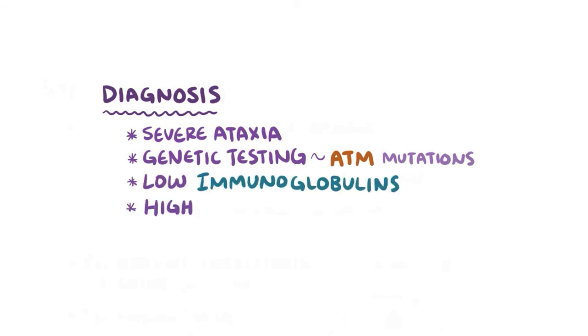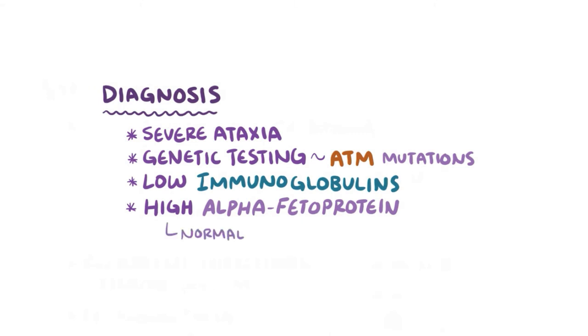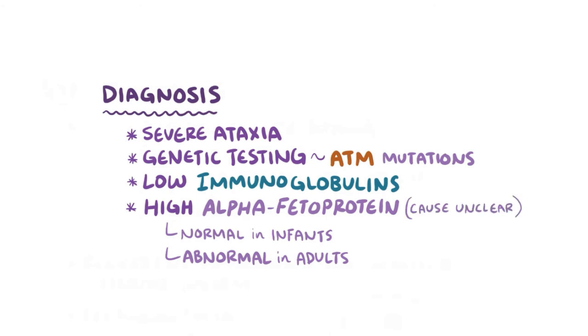and a high level of a protein called alpha-fetoprotein. Alpha-fetoprotein levels are usually high in infants but then fall afterwards, and the reason it's high in individuals with ataxia telangiectasia is a bit of a mystery.